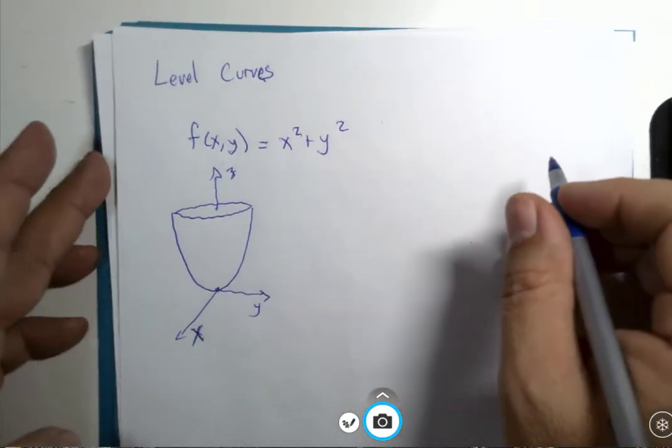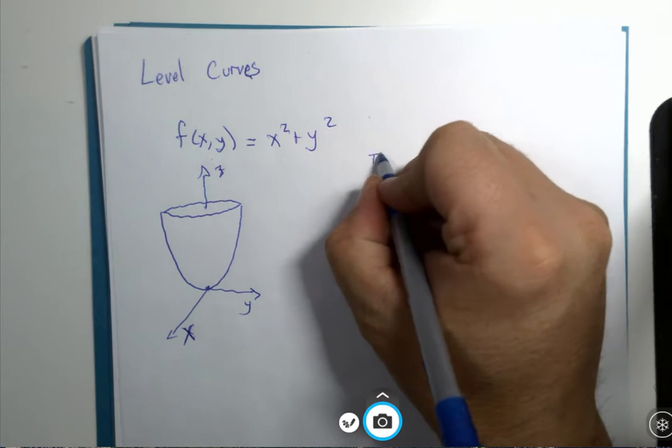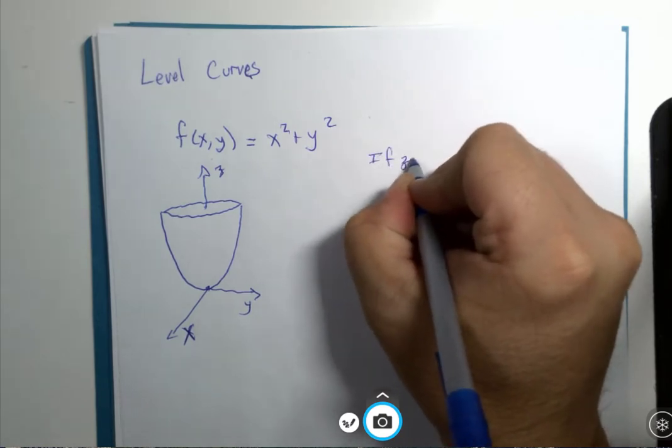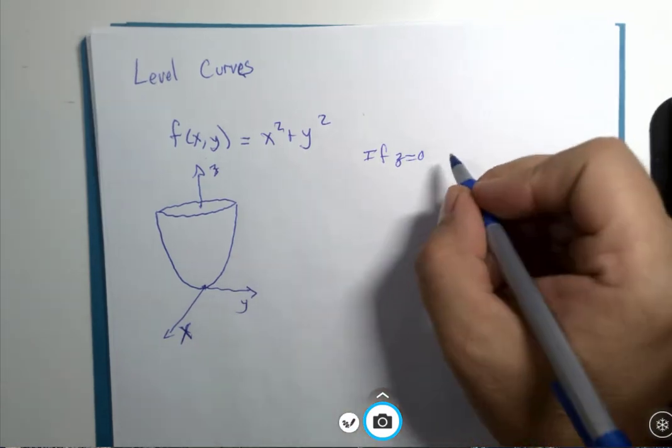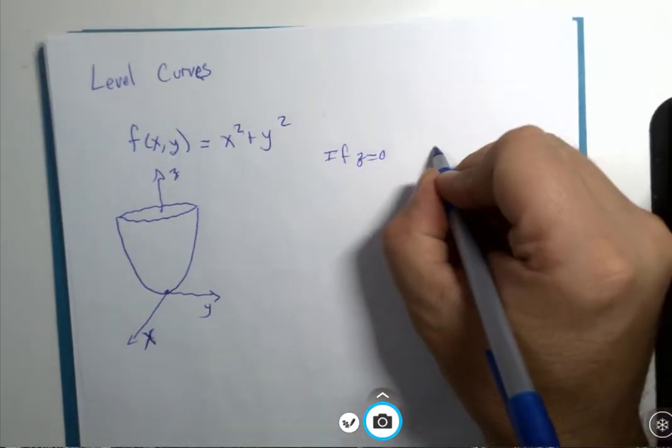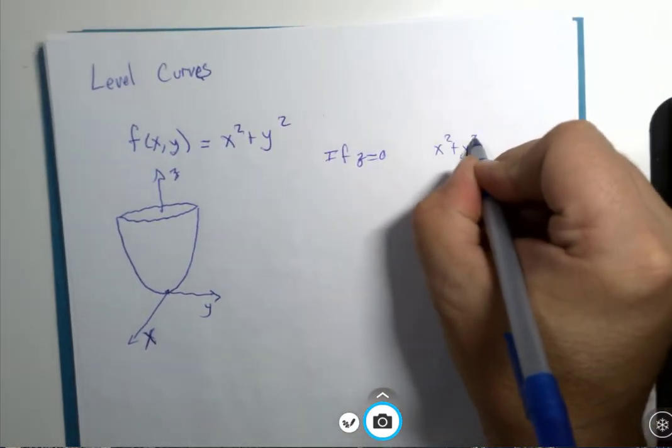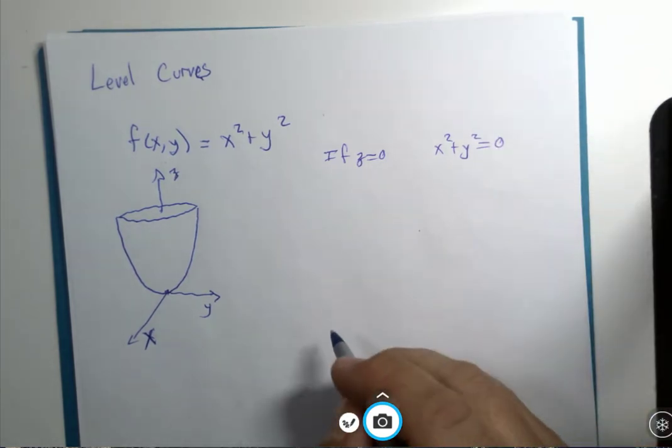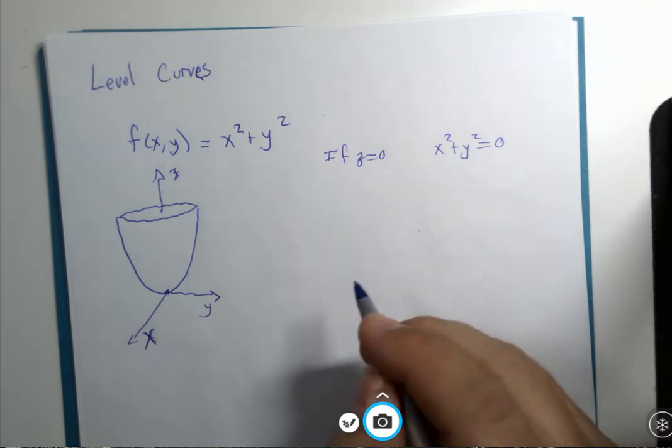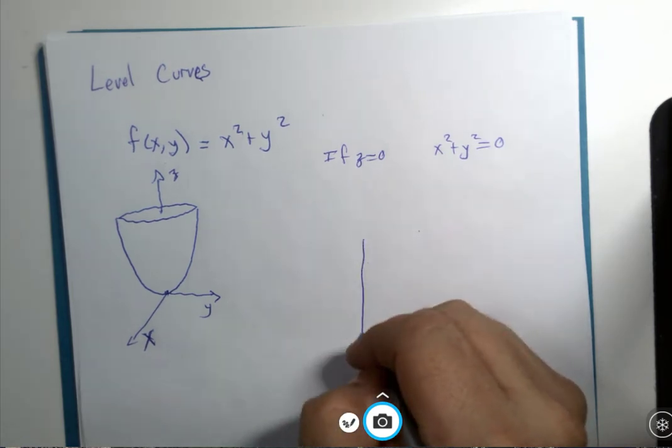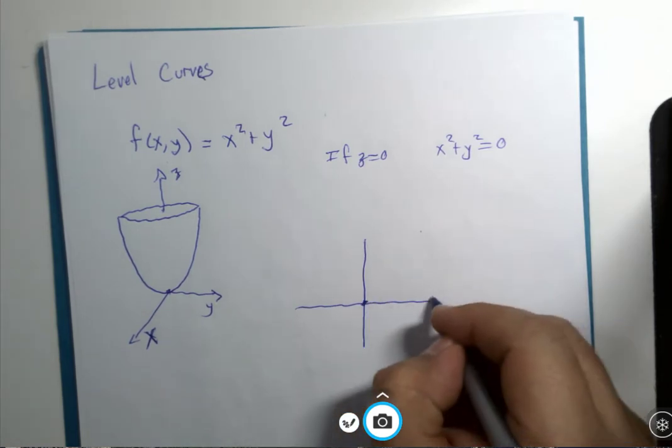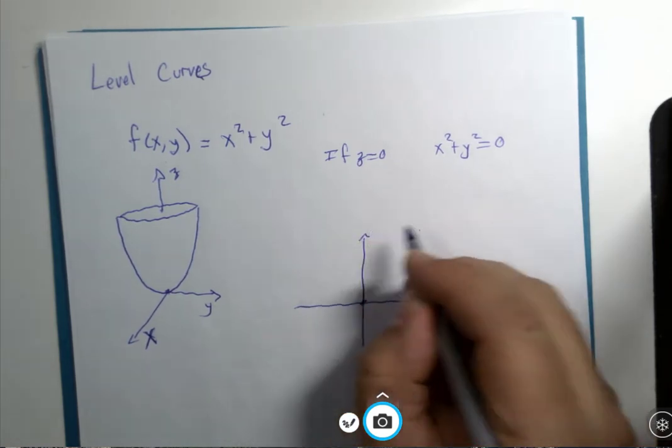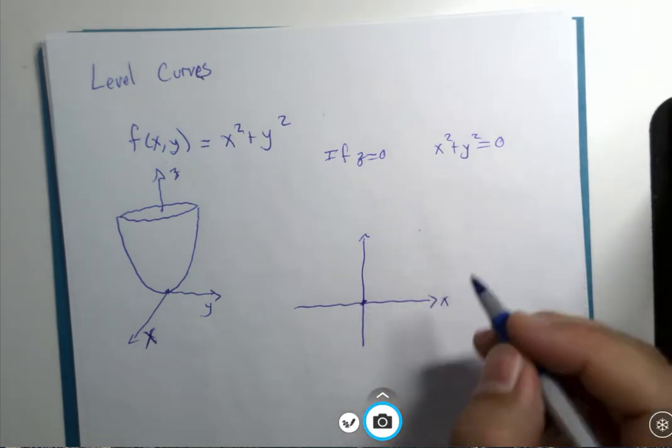If we let z equals 0 in this problem, we would have x squared plus y squared equals 0. And if I were to attempt to graph that, it would just be a single point. The origin would be the point that goes along with that. There are no other x and y values you can square them and the sum would be 0.